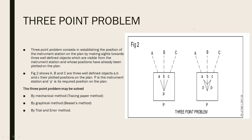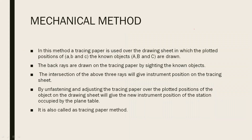So there are 3 key methods that we need for the 3-point problem: the graphical method, the Lehmann's method (or trililateral method), and the mechanical method — which is the tracing paper method. We use the tracing sheet paper method for back-sighting, where we hold the tracing paper from the back.